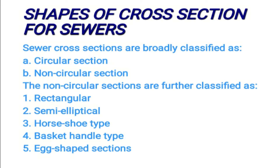Sewer cross-sections are primarily classified into circular sections and non-circular sections. Among the non-circular sections, we have five different shapes.